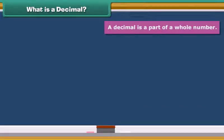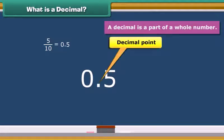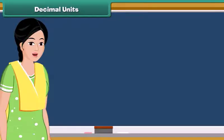Basically, a decimal is a part of a whole number. Look, the fraction 5 by 10 could be written as 0.5. You can easily identify a decimal by looking at the decimal point.